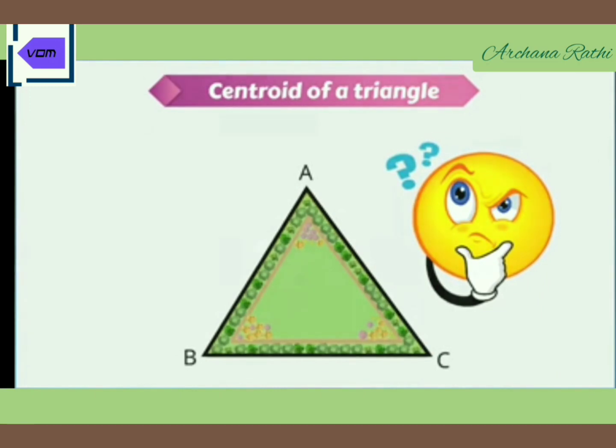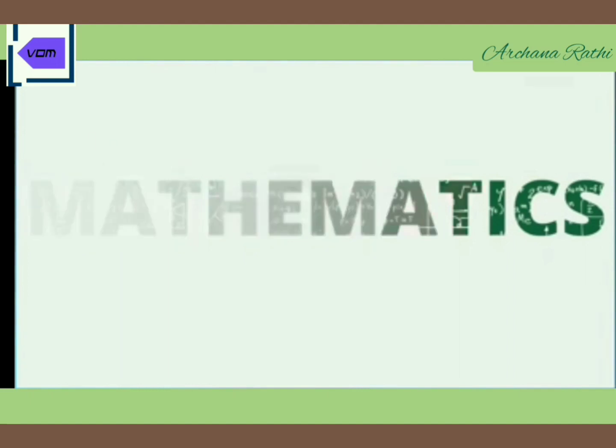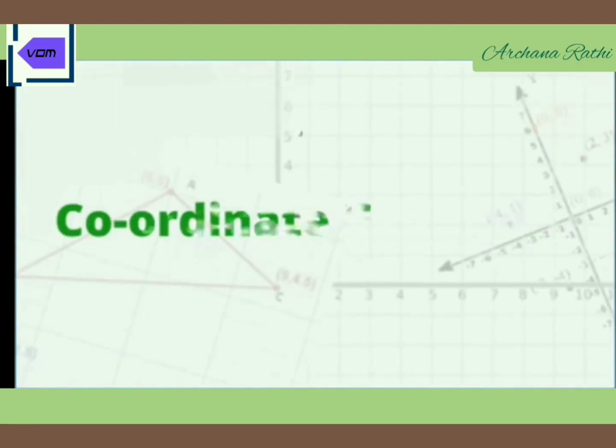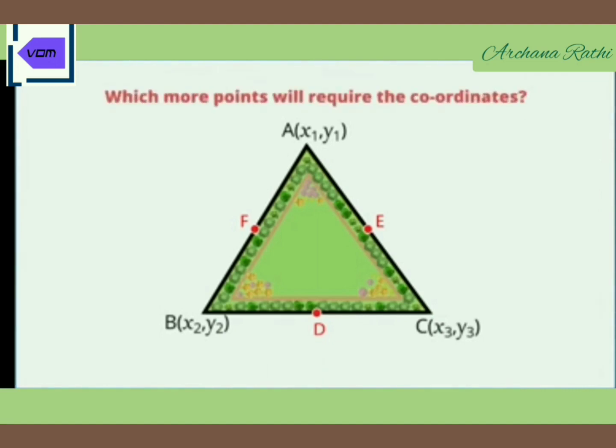Mathematics will help us now. We will take the help of coordinate geometry to find the centroid. Let us suppose A, B, C are the vertices of a triangle with given coordinates as shown in the figure. We also require coordinates of E, F, and D. Let us find the coordinate of point D, which is the midpoint of BC.